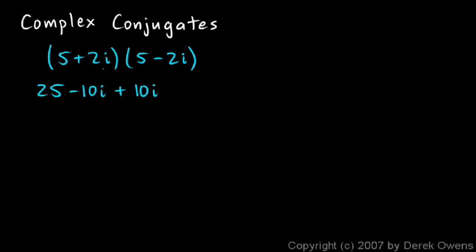And then for the last, I have 2i times negative 2i, which is negative 4i squared. And don't forget that squared. Now notice that this negative 10i and the positive 10i cancel out, so we'll cross those out. And also notice that the i squared right there, remember i squared is negative 1.